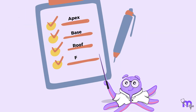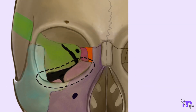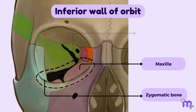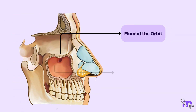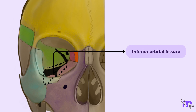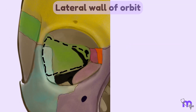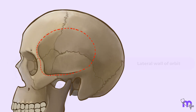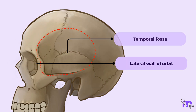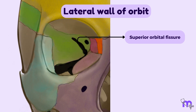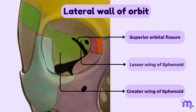The floor, also called the inferior wall, is formed by three bones: the maxilla, zygomatic bone, and palatine bone. It separates the orbit from the maxillary sinus. A notable landmark in the floor of the orbit is the inferior orbital fissure. The lateral wall consists of the zygomatic bone anteriorly and the greater wing of the sphenoid bone posteriorly. This wall separates the orbit from the temporal fossa. A prominent feature of the lateral wall is the superior orbital fissure, nestled between the greater and lesser wings of the sphenoid bone.